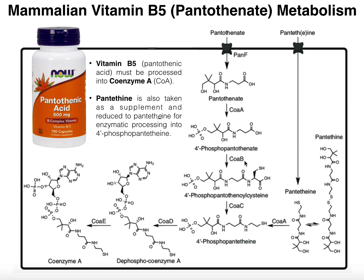The next enzyme, named for the gene, is CoaB. The enzyme itself is called 4'-phosphopantothenoyl cysteine synthetase — a very long name. Essentially, what it's going to do is use the power of ATP, take a cysteine residue — the cysteine amino acid — and ligate it onto the carbon of 4'-phosphopantothenate, creating another amide bond. You can see that the amide bond is to a cysteine residue, a cysteine amino acid. That molecule is called 4'-phosphopantothenoyl cysteine.